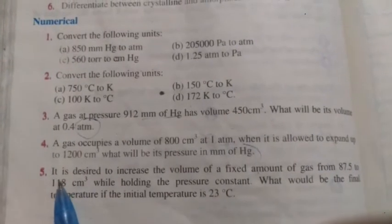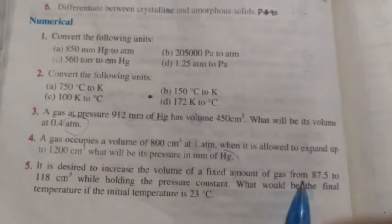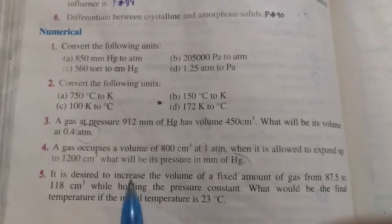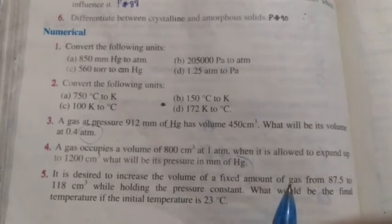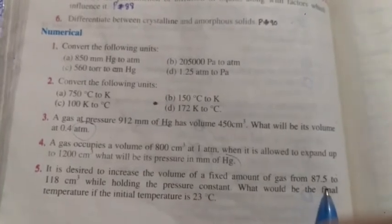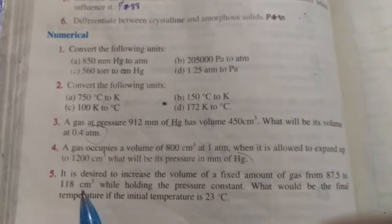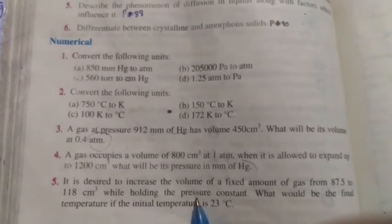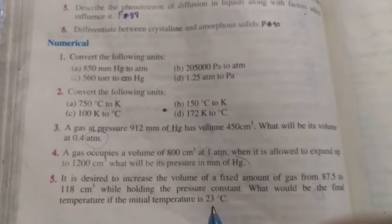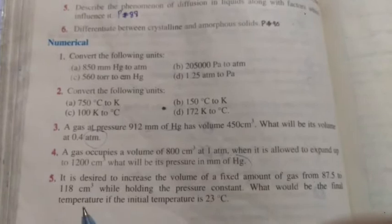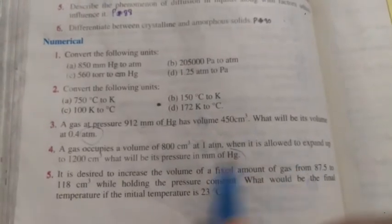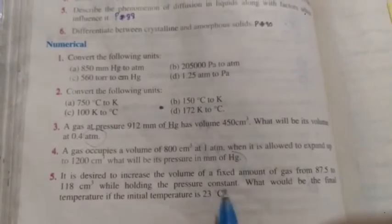Next, question number 5. Statement is: It is desired to increase the volume of a fixed amount of gas from 87.5 to 118 cm³. We want the volume of a fixed amount of gas to increase - the gas amount is fixed and we need to increase its volume. Initial volume is 87.5 and we want to increase it to 118, while holding the pressure constant. We will keep the pressure constant; we will not change the pressure.